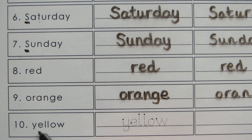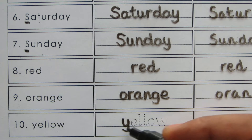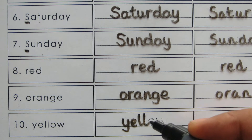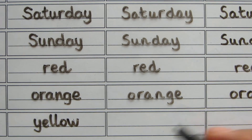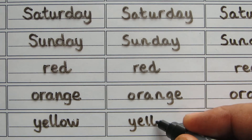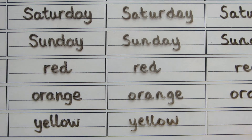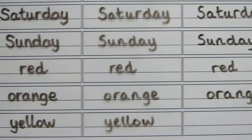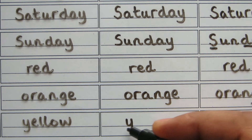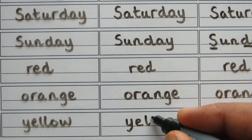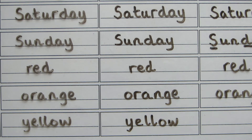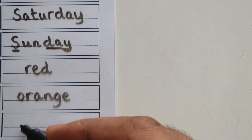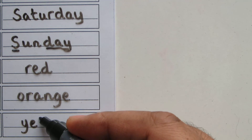The tenth word on this sheet is Yellow. Y-E-L-L-O-W, Yellow. So let's start: Y-E-L-L-O-W, Yellow. On to the next box: Yellow, Y-E-L-L-O-W, Yellow. On to the third box: Yellow. Y-E-L-L-O-W, Yellow. On to the last box without looking: Yellow. Y-E-L-L-O-W, Yellow.